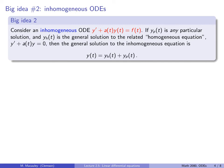Suppose we know some particular solution yp(t) to the inhomogeneous equation — frequently we can find one by inspection, maybe a constant solution. And suppose we also know the general solution yh(t) to the much simpler homogeneous equation, which will contain a constant of integration and can be solved by separation of variables. Then we automatically have the general solution: just add those two things together.